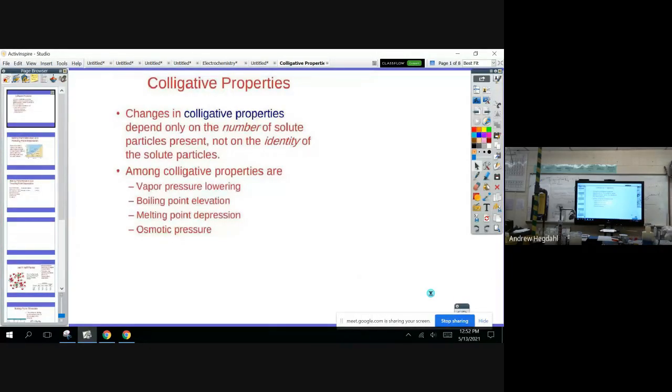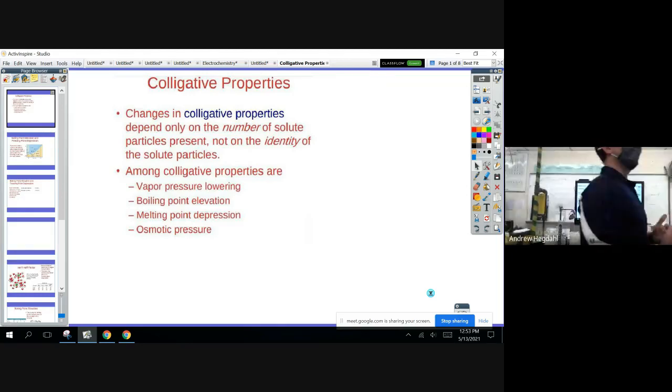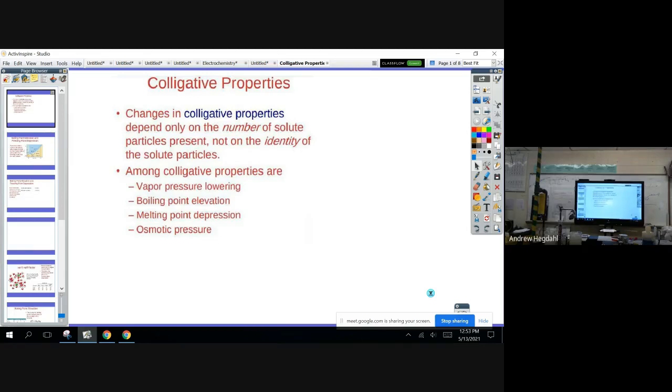All right, so today we're going to lecture for a little bit on colligative properties. I'm going to introduce boiling point elevation and freezing point depression, and then today and tomorrow we'll do a lab on each one. Today is the spaghetti lab - it's going to be why you add salt to water when you cook your noodles. Adding the salt raises the boiling point of the water, so your noodles cook faster and you get a little bit of salt to flavor it.